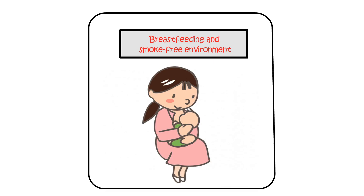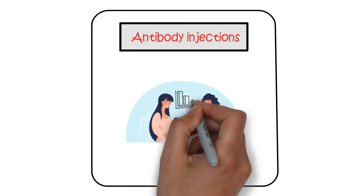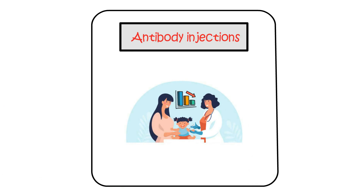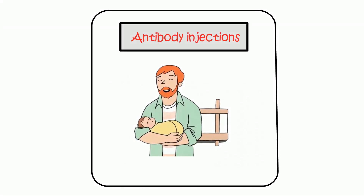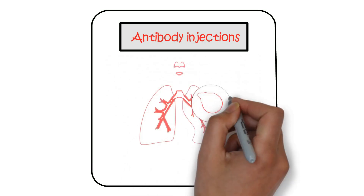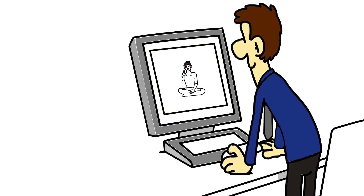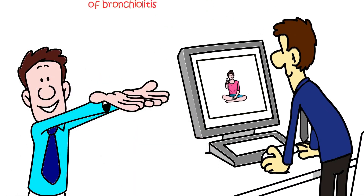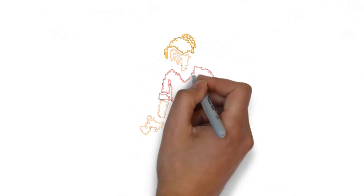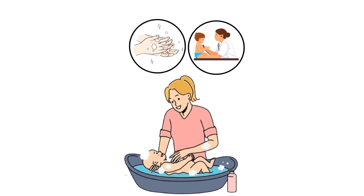Breastfeeding provides antibodies from the mother that can potentially offer some protection. In some cases, monthly antibody injections given from birth may be considered to reduce the severity of bronchiolitis, primarily reserved for very premature babies or those with severe chest or heart conditions. While these preventive measures may have some benefits, they cannot guarantee complete prevention. The best approach is to maintain good overall hygiene practices such as frequent hand washing and promptly seeking medical attention if symptoms of respiratory illness develop in babies or young children.